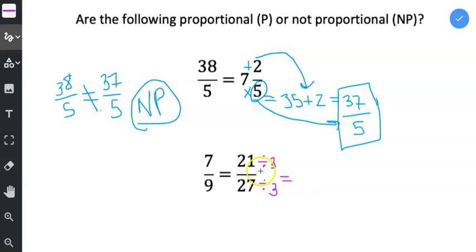To write this properly, notice that I put a division symbol here and a division symbol here. 21 divided by 3 is 7. 27 divided by 3 is 9. And look at that, 7 ninths is equal to 7 ninths. So this is proportional. So I put a P, it's proportional because the unit rates were the same.